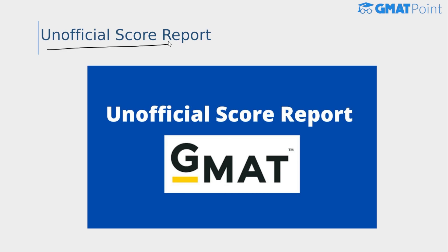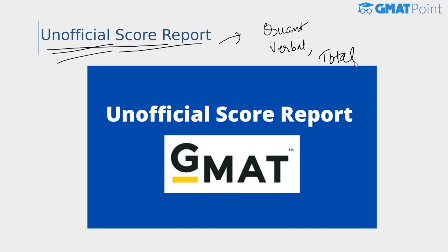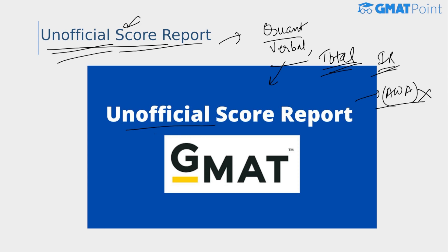After you have taken the GMAT and accepted your scores, you will be given a printout of your scores at the exam center immediately after the exam. On your unofficial score report, the scores for quant, verbal, your total overall GMAT score, and your integrated reasoning scores will be mentioned. Your AWA score will not be on the unofficial score report — you will receive it along with your official scorecard.